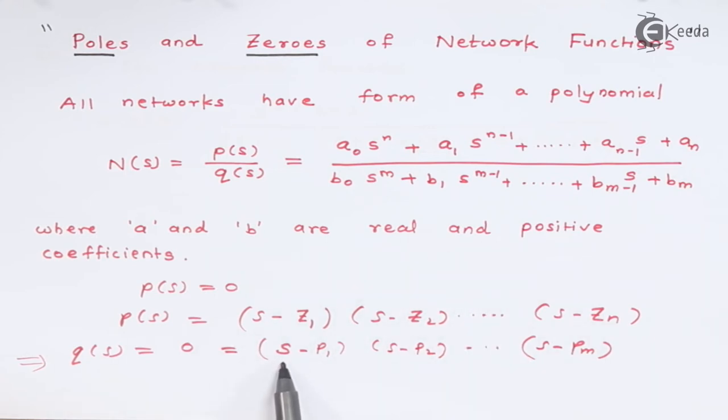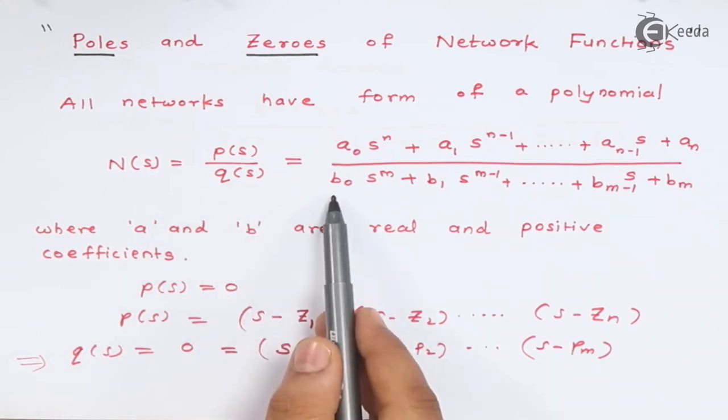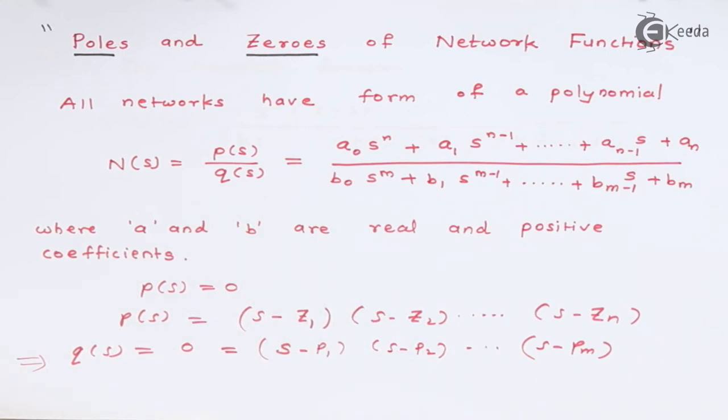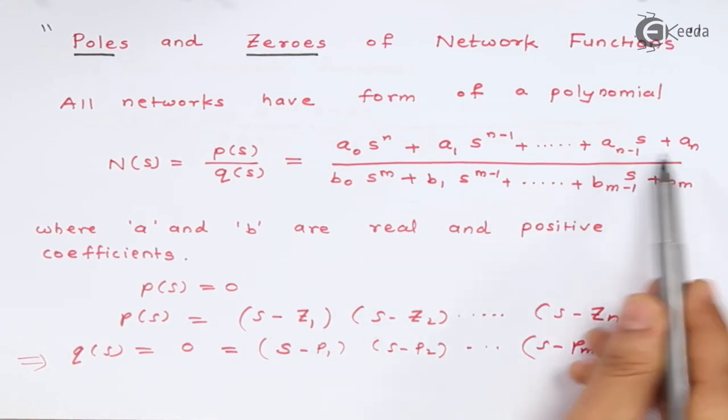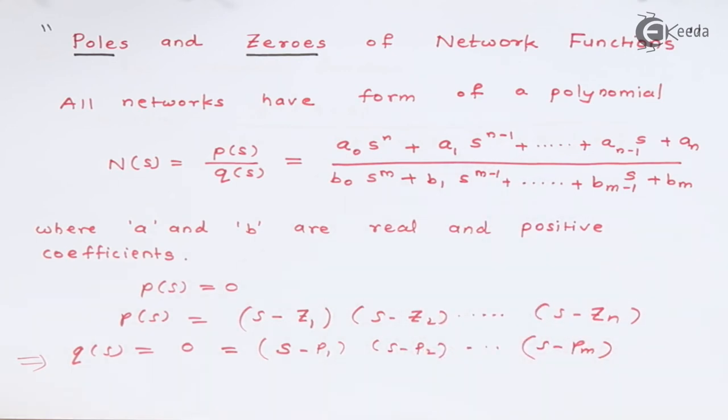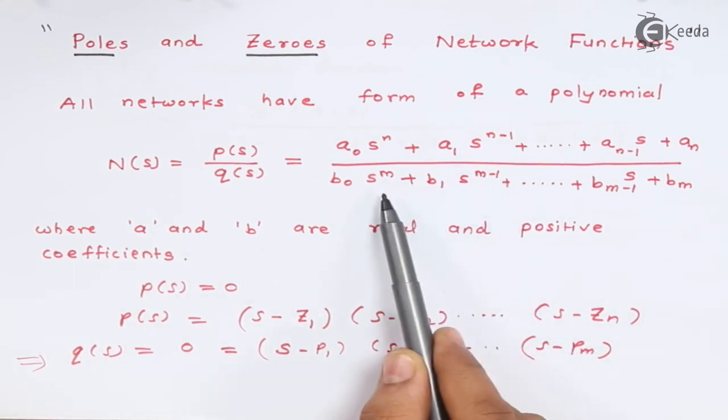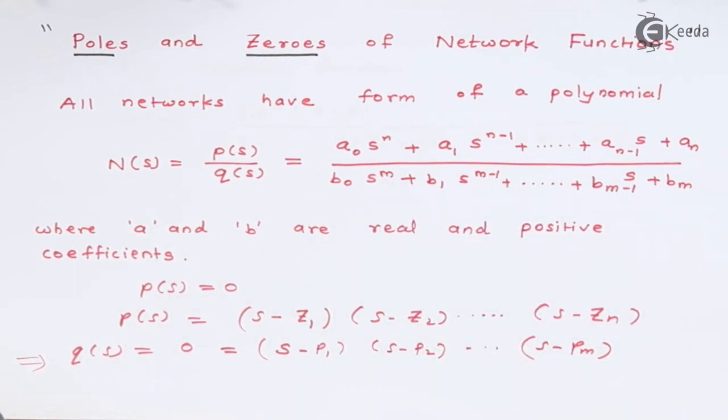That means those values of s which are exactly equal to this p₁, p₂ and pₙ because of which this Q(s) is going to be 0, those values of s are called as poles of this network. So this is very simple definition. Zeros means network function becomes 0. You have to see the numerator polynomial, and poles means your denominator polynomial will become 0.